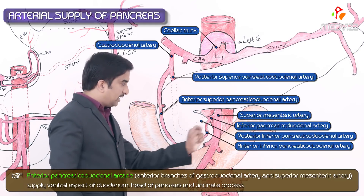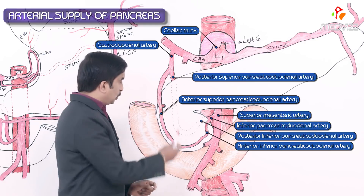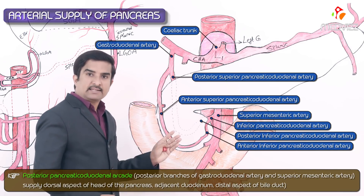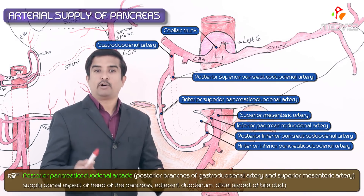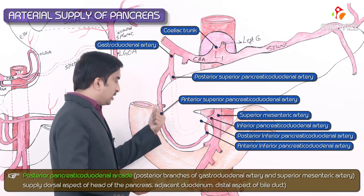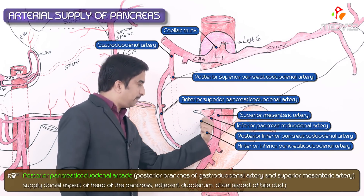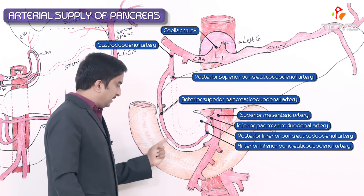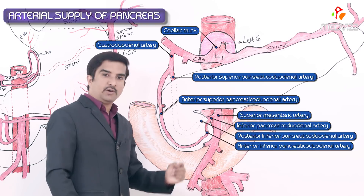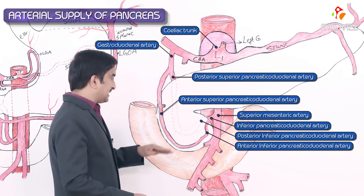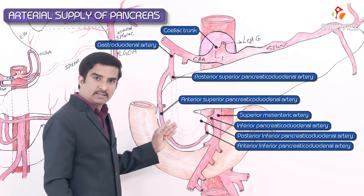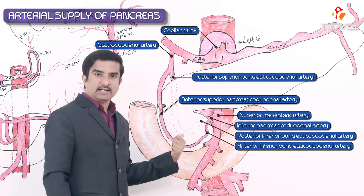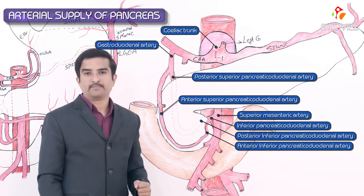The two posterior arteries supply the dorsal aspect of the pancreatic head and adjacent duodenum, and also give important blood supply to the distal bile duct. They join with the posterior branch of the inferior pancreaticoduodenal artery to form the posterior pancreaticoduodenal arcade. So we have both an anterior and a posterior pancreaticoduodenal arcade, formed by four arteries supplying the head of the pancreas and adjacent duodenum.